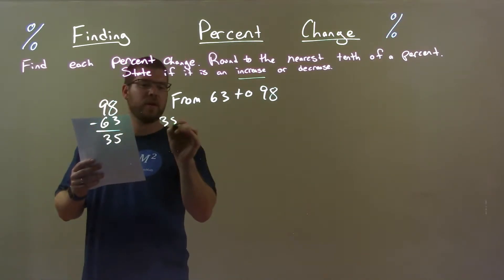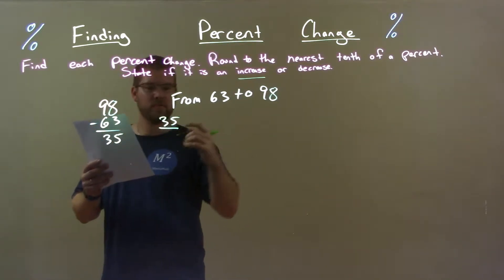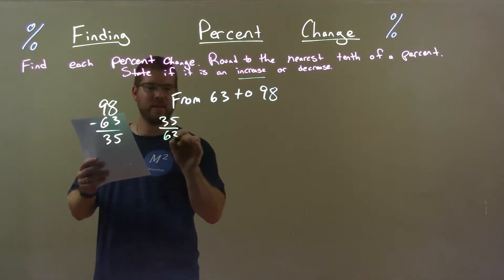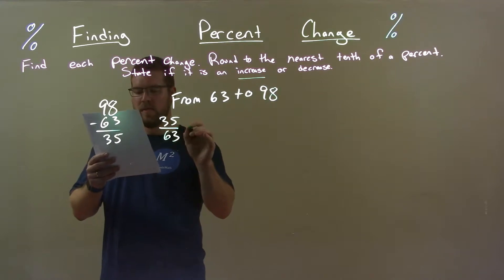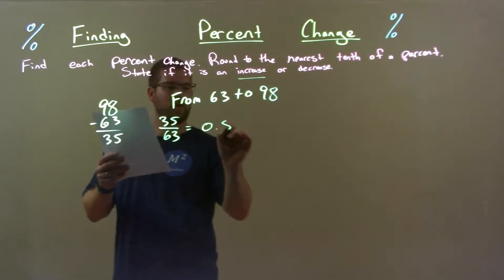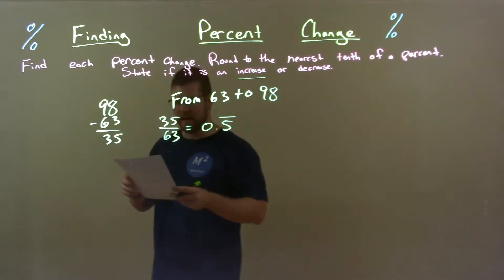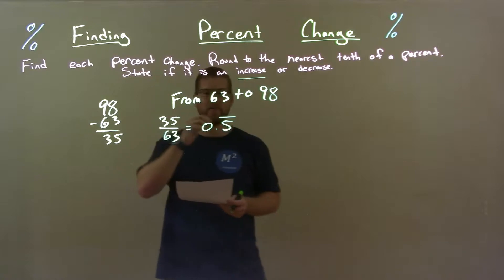Take that number 35 and divide it by the first number, 63. That comes out to be exactly 0.5 repeating.